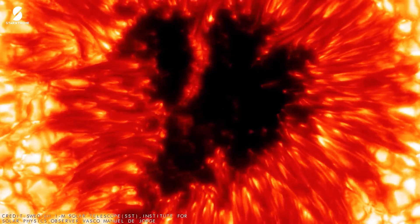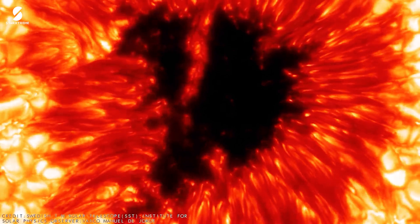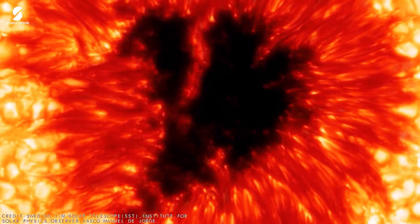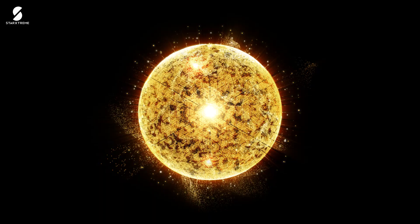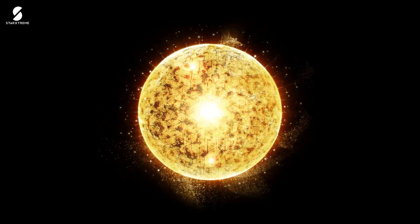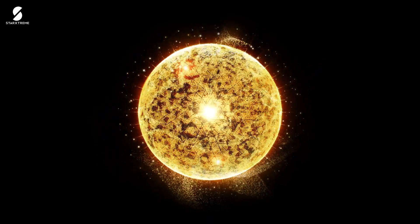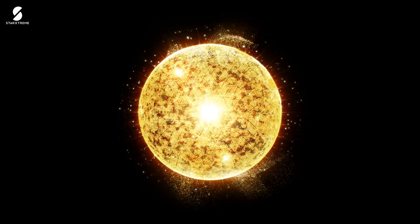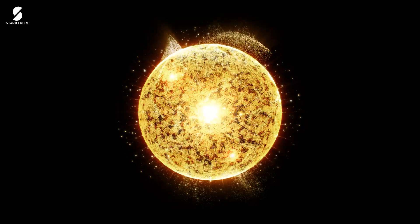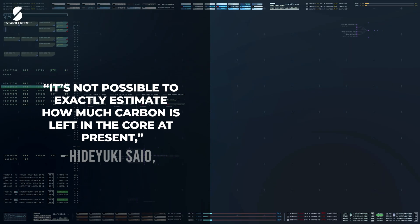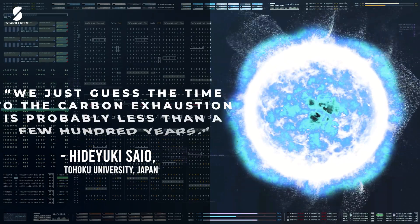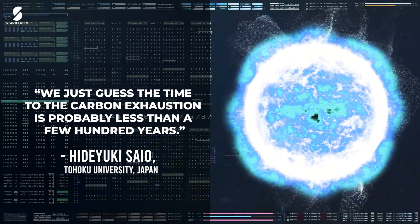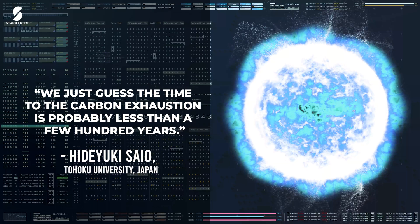After carbon is exhausted in the core, a core collapse leading to a supernova explosion is expected in a few tens of years, the researchers write. But when will the carbon run out? It's hard to tell because the pulsation periods don't change much at this late stage. It's not possible to exactly estimate how much carbon is left in the core at present, Sayo says. We just guess the time to the carbon exhaustion is probably less than a few hundred years.